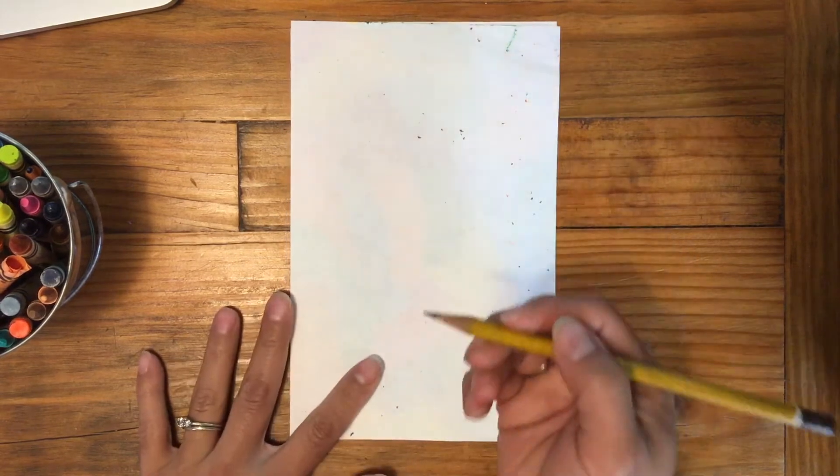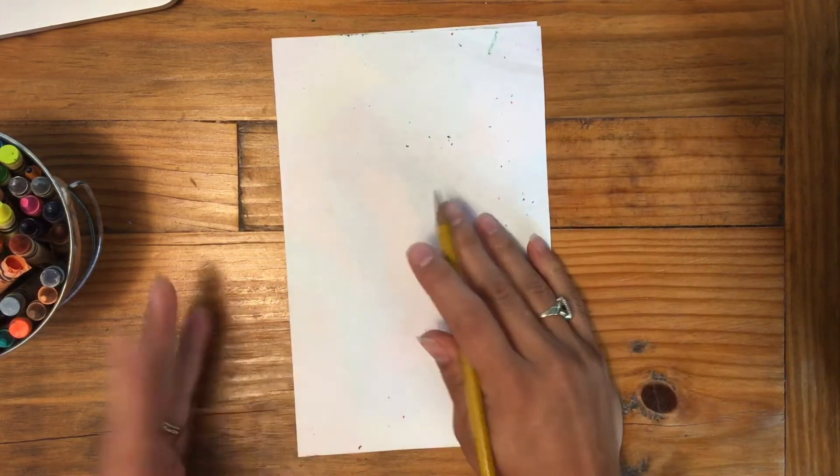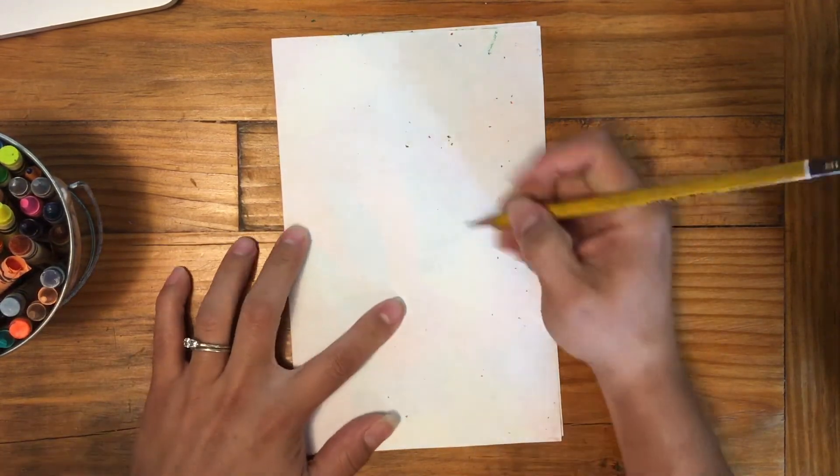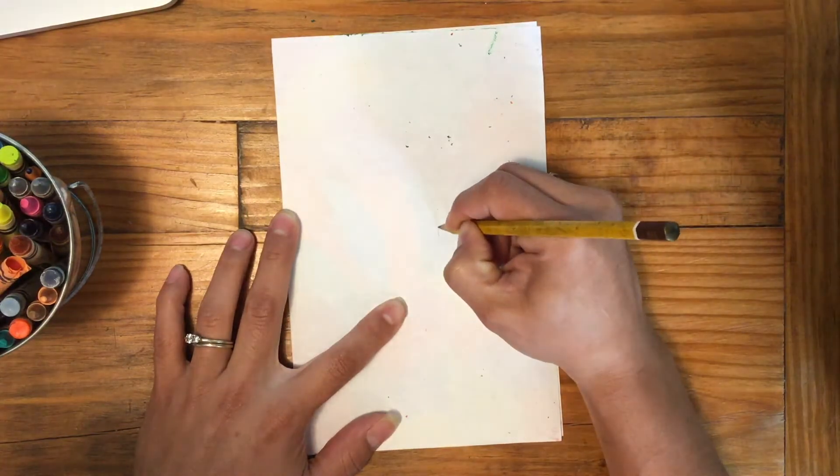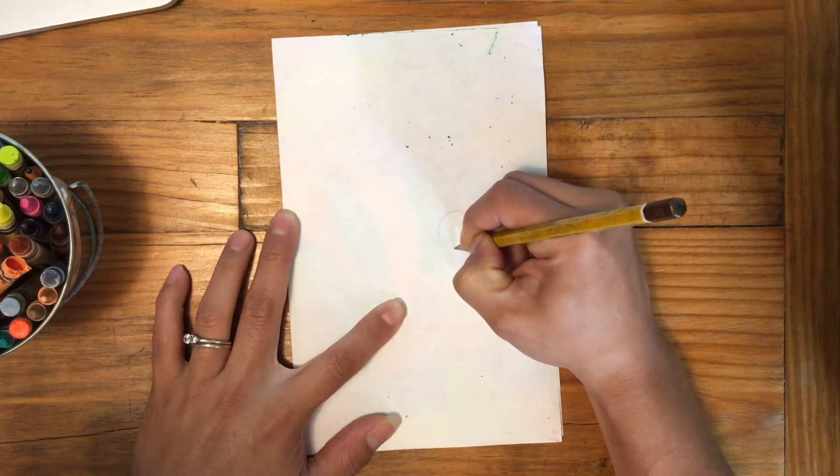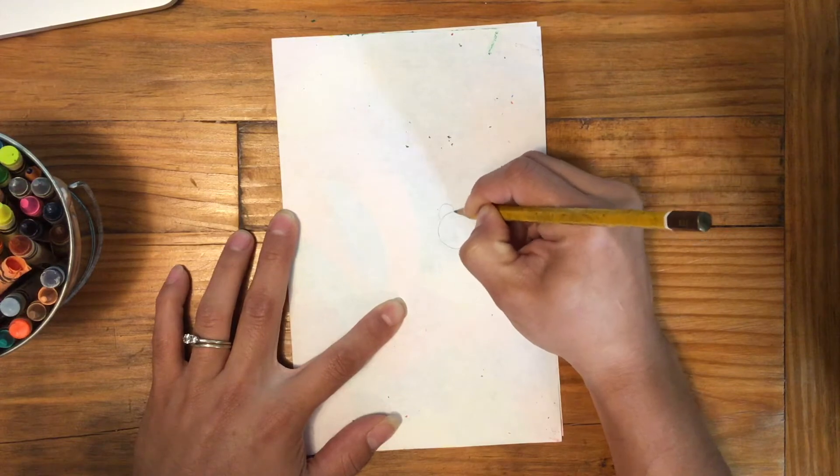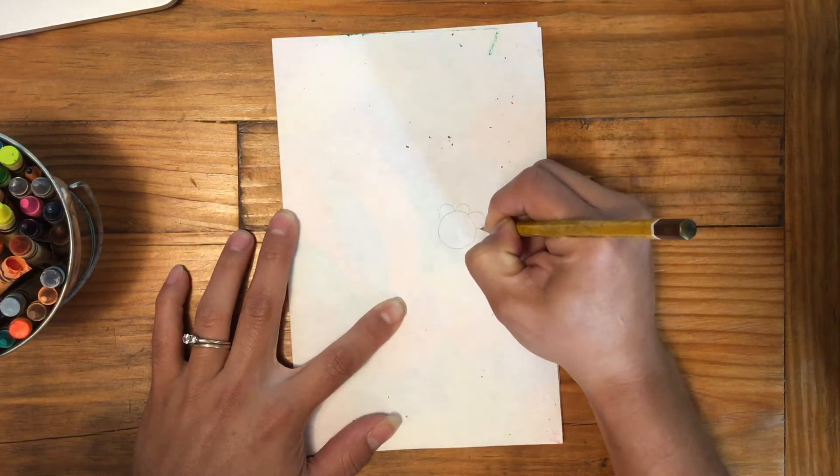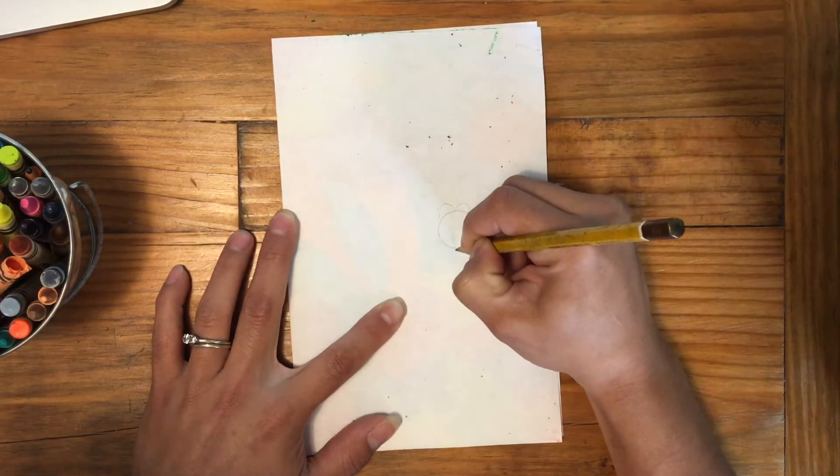I'm going to take my nice sharp pencil and just start doodling. I'm going to press as hard as I can and I think right now I'll start with a little flower here.